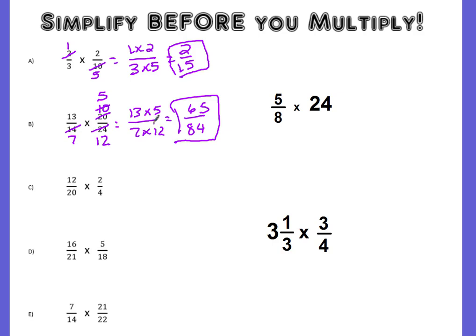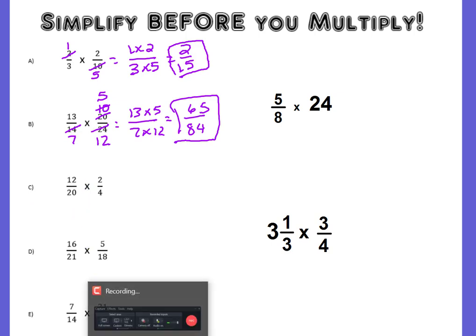That's much easier than multiplying 13 times 20 and then 14 times 24 and then trying to simplify all of that — those are pretty large numbers, very easy to make mistakes. So make it simpler for you by simplifying first. Go ahead and pause the video and work problems C, D, and E by yourself.